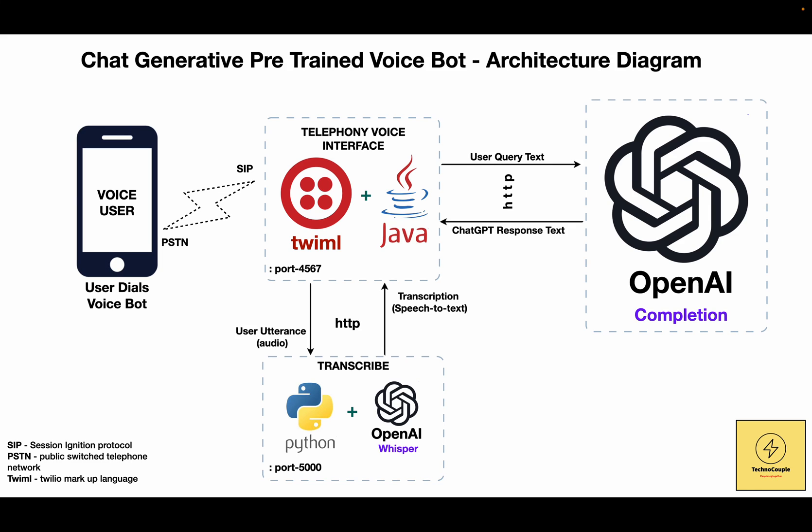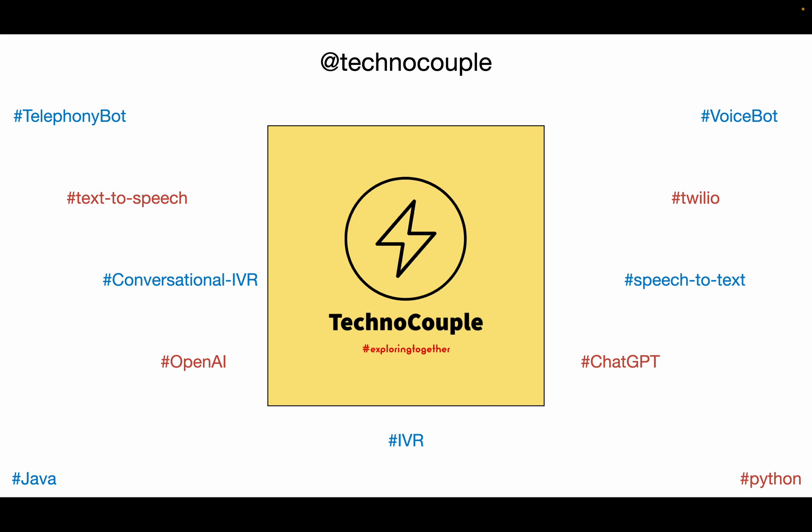Now that we have the completions text, we will use TwiML to construct the audio response which will be played back to the caller. Since it's a dynamic response, we are using Amazon Polly for text-to-speech conversion. For the complete demo, you can visit our previous video which contains a sample interaction between the caller and the voice bot — link is in the description below. That's all for now. We will see you in the next video. Bye-bye.